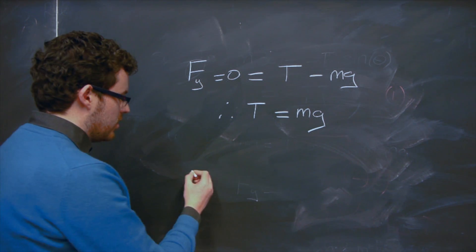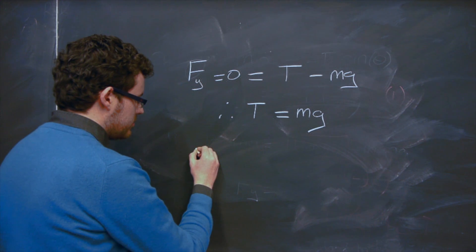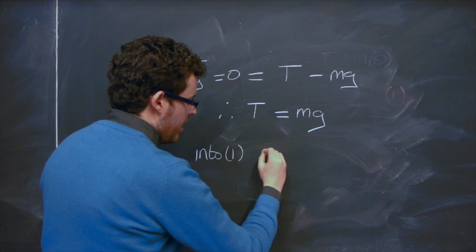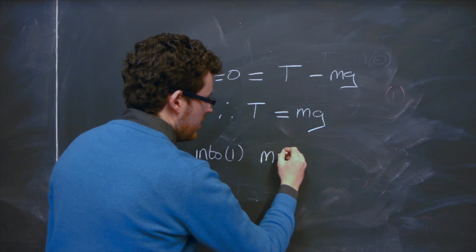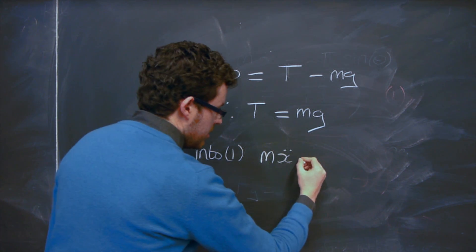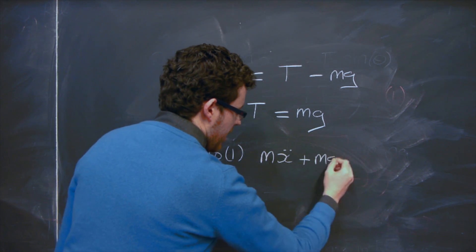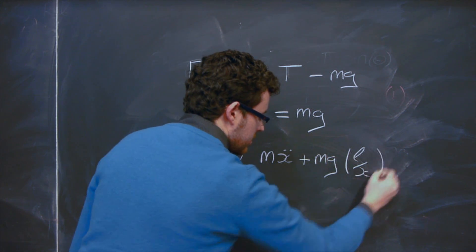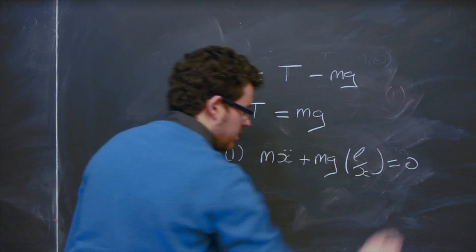So we put that into equation 1 and we'll get mx double dot plus mg times x over L equals 0.